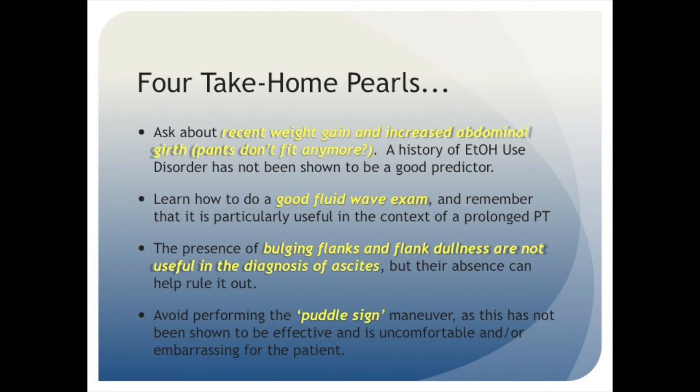Third, if you go back and look at the physical exam maneuvers that we discussed earlier in this presentation and compare their respective likelihood ratios, which were calculated from pooled studies and reported in McGee's evidence-based physical diagnosis, you'll notice that two commonly taught physical exam findings, bulging flanks and flank dullness, have positive likelihood ratios close to one, meaning that they're not that useful in detecting ascites. However, their negative likelihood ratios are relatively significant, both around 0.4, meaning that the absence of these findings will help you rule out the presence of ascites.